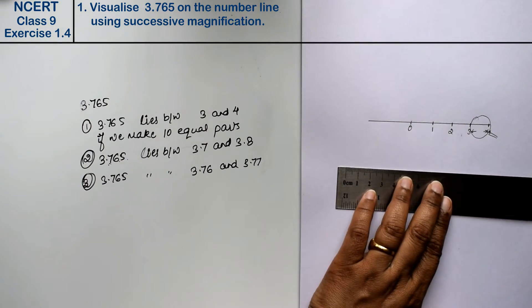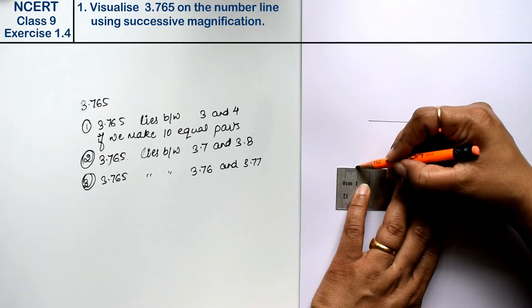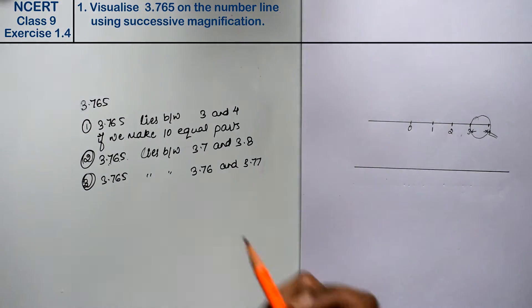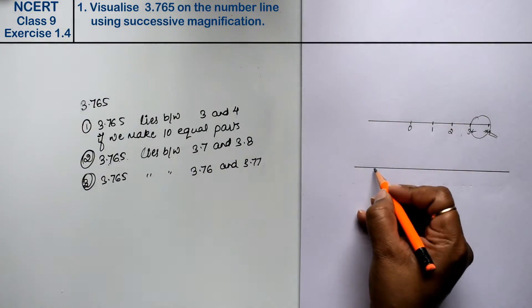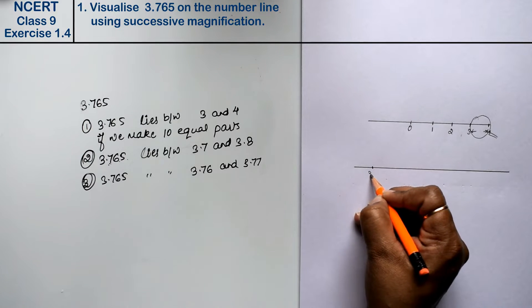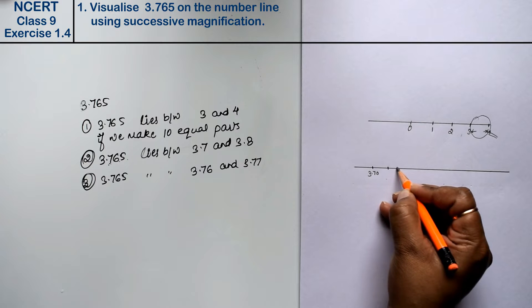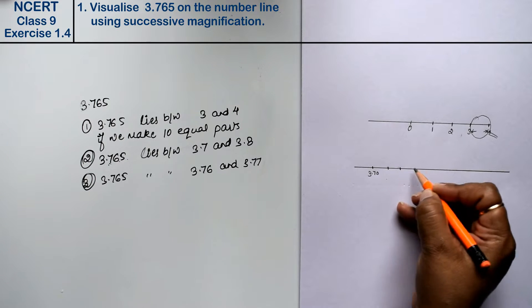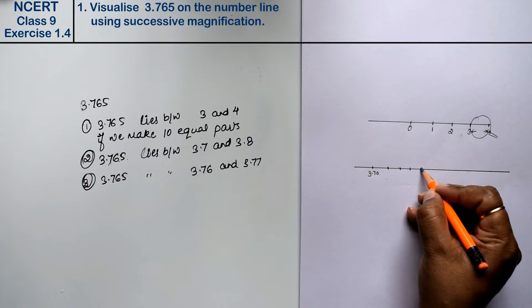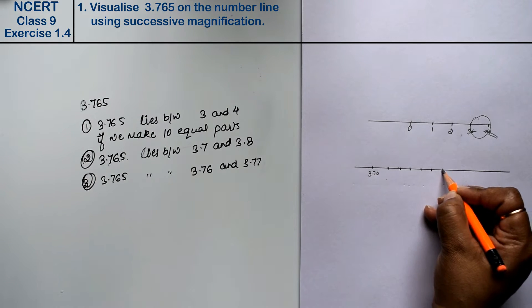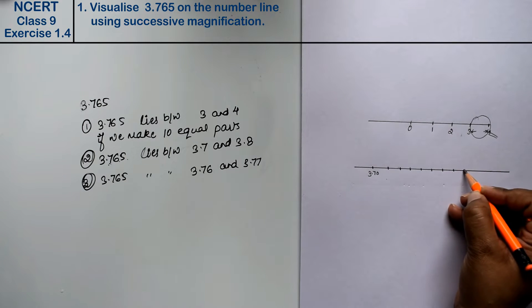Now, let's make another number line. The number line is 3.7 to 3.8. 2, 3, 4, 5, 6, 7, 8, 9 and this is 3.8.